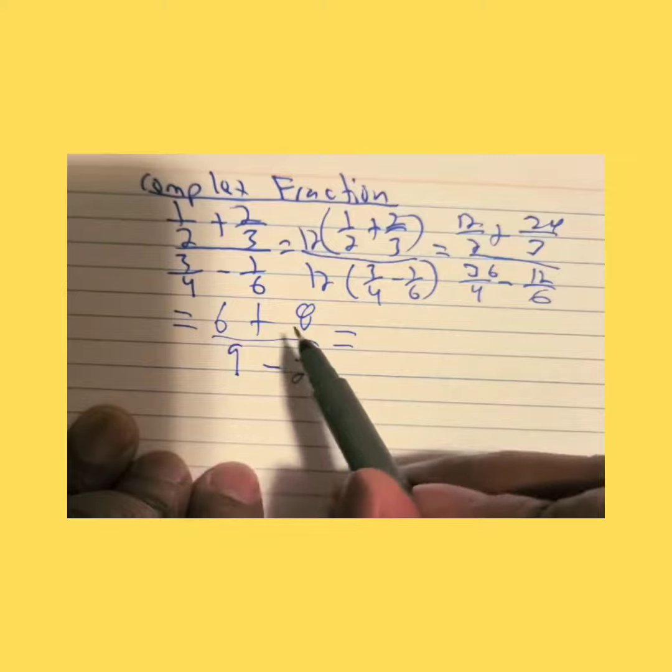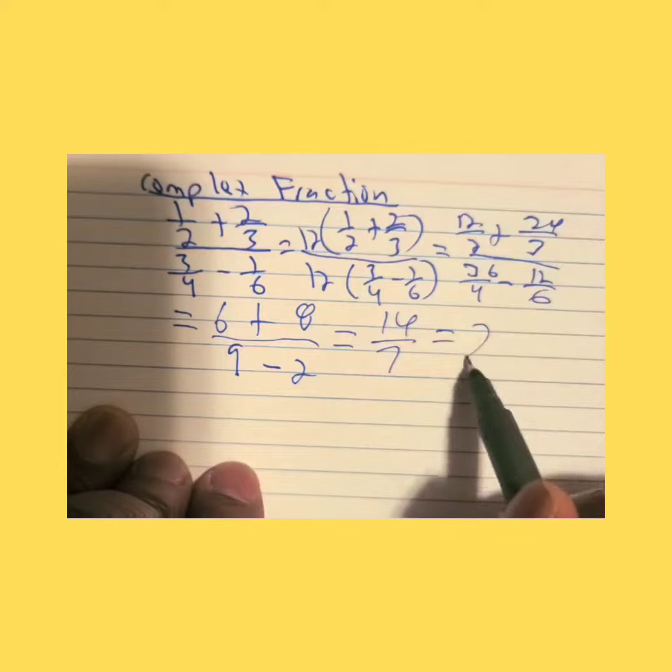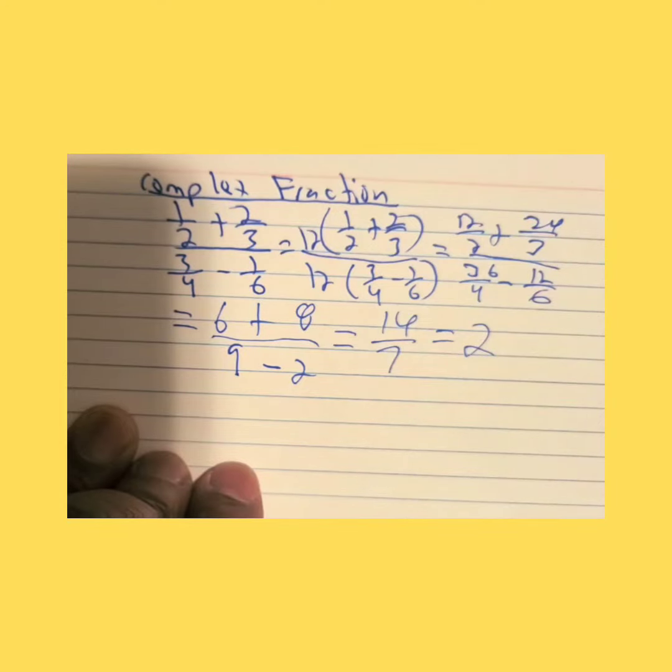Will equal 6 plus 8 is 14, 9 minus 2 is 7, 14 divided by 7 is 2, and that will be your answer. Thank you very much.